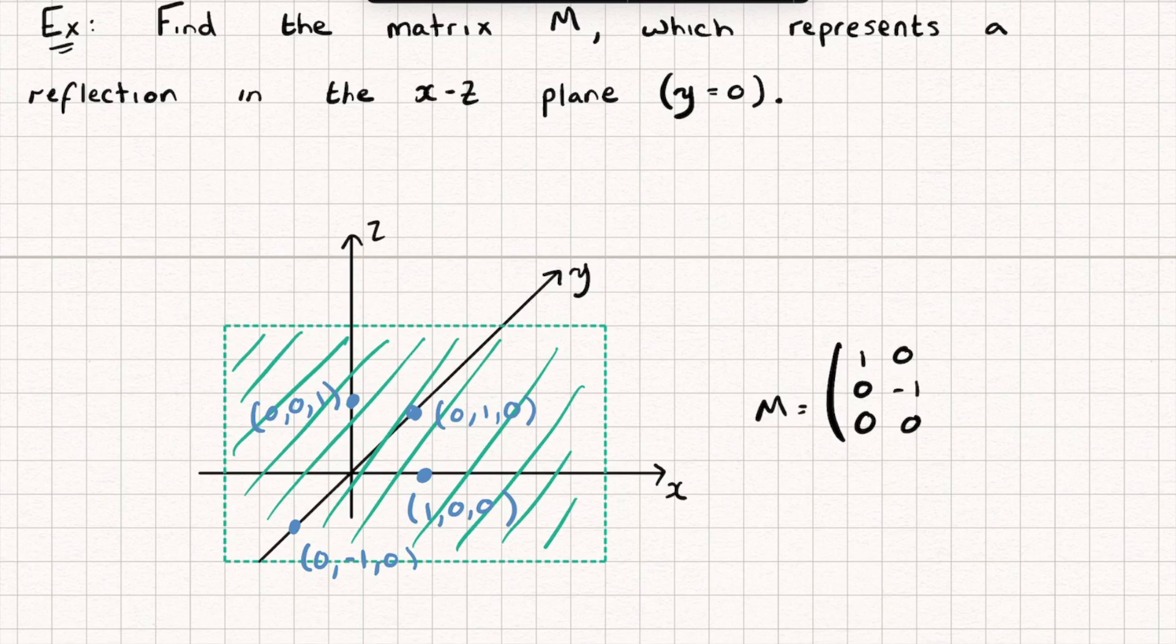And finally the point (0,0,1), well that's on the plane so that's going to remain fixed. And there we go. They're the three matrices that we want to know for reflections in the XY, XZ and YZ plane.